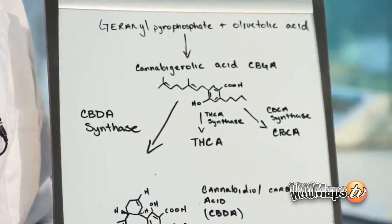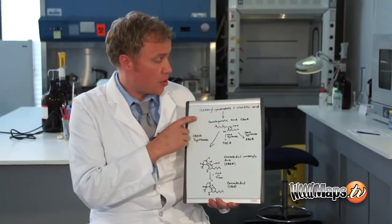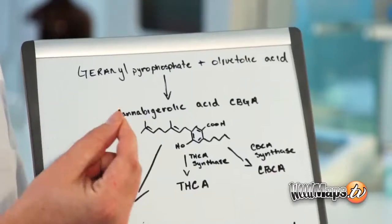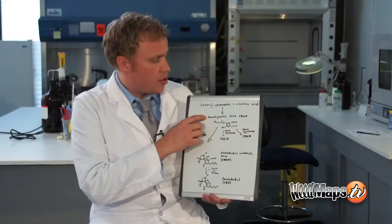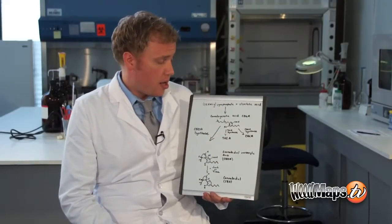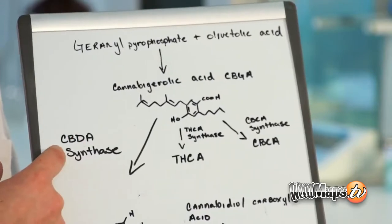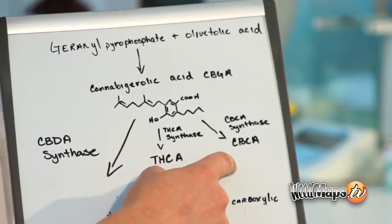CBD is synthesized in the plant through the same pathways as THC and CBC. It starts out as geranyl pyrophosphate and olivetolic acid. Those two compounds join together through an enzyme-catalyzed reaction. Cannabigerolic acid, CBGA, is the starting material for CBDA, THCA, and CBCA.